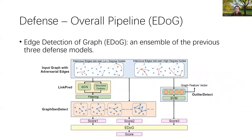Finally, we aggregate all three detections together. The link prediction algorithm is used to filter suspicious edges. We have a score for each approach, and our final prediction is a weighted average of the predicted scores from each component.